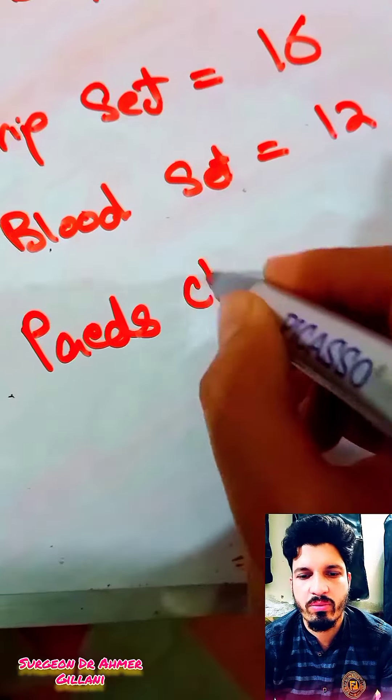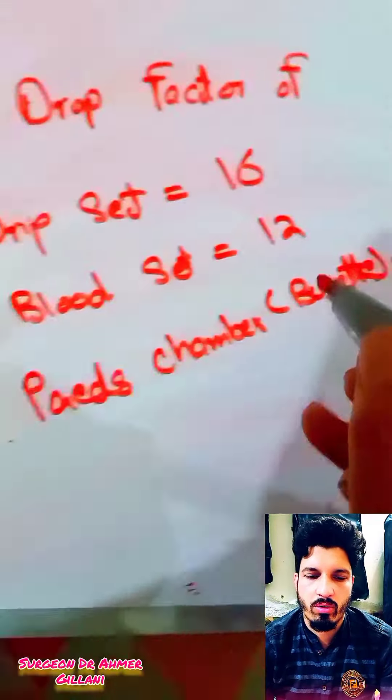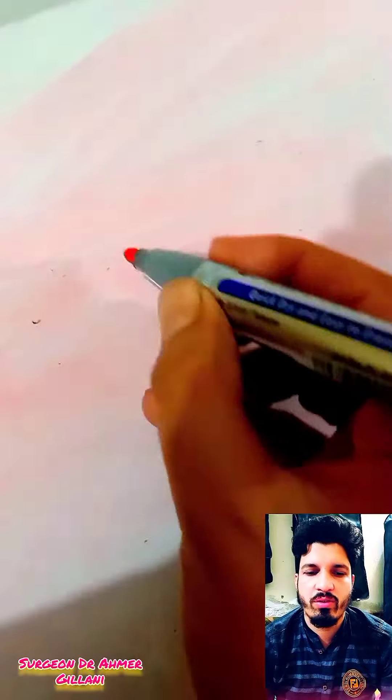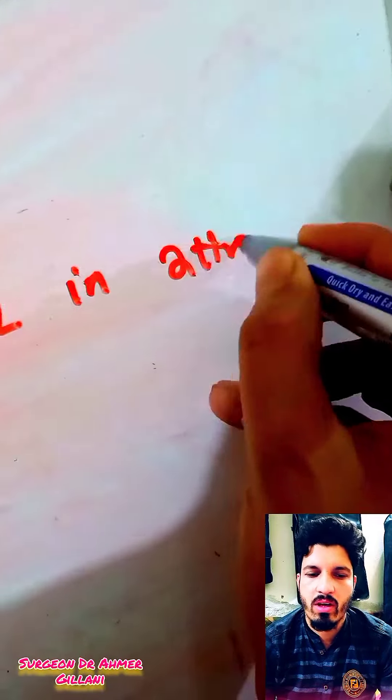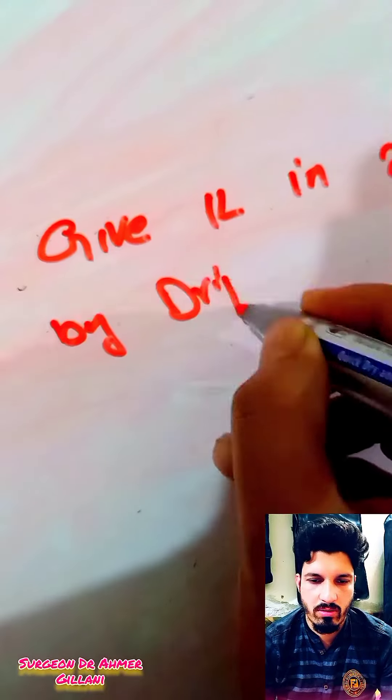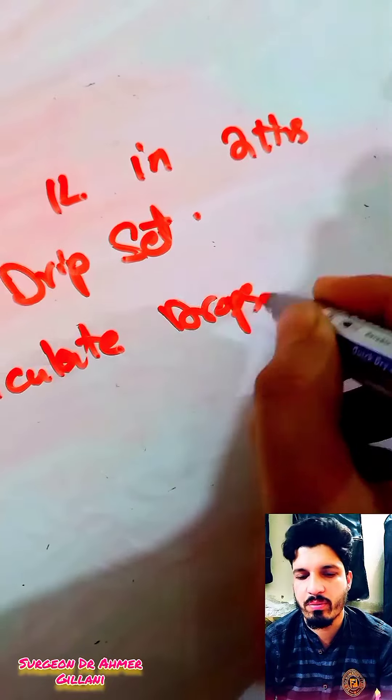The pediatric chamber is also known as buret. So if you have a scenario, then give them one liter in two hours by the drip set. So we are given that, calculate drip drops per minute.